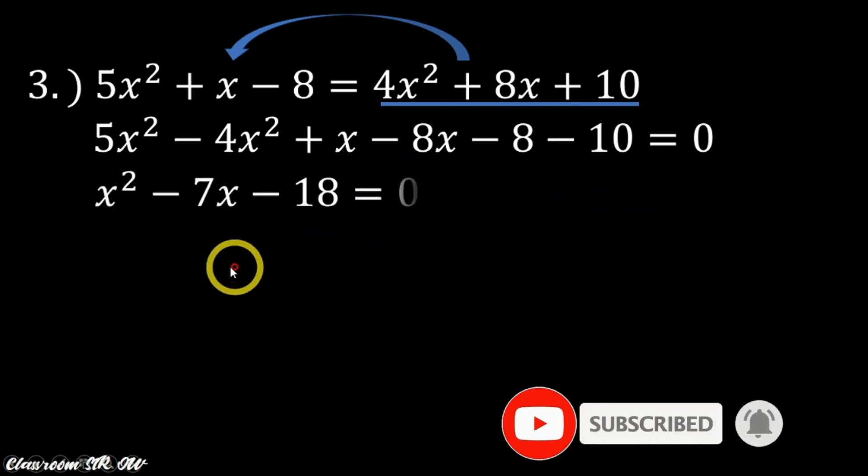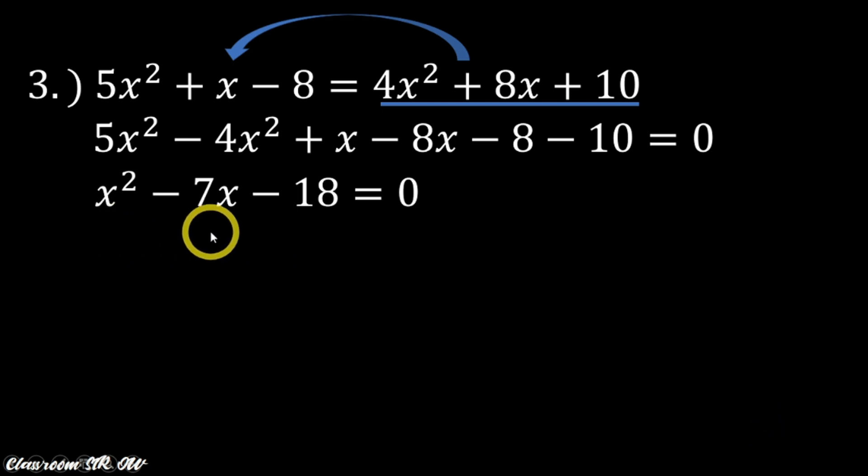Simplifying this further, of course, that gives us x² - 7x because x - 8x is -7x. A -8 and -10 is -18, of course, equals 0. So since the coefficient of our x² is already 1, it's already imaginary, so we can now apply our diamond method. So -7 is already here and -18 is at the bottom.